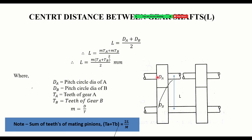Now consider the center distance between two gear shafts. The center distance L equals Da/2 plus Db/2, where Da and Db are the pitch circle diameters of the two meshing gears. The pitch circle diameter is related to module M by the formula: M equals D divided by T.